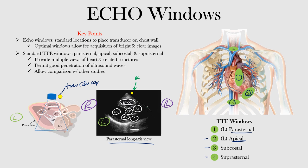The fourth window is the suprasternal window, number four, placed above the sternal notch. From there we're looking down from above and we can see the aortic arch branches, the left atrium, and the right pulmonary artery. So there are a number of structures visible from that window as well.